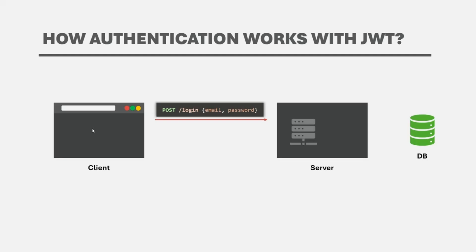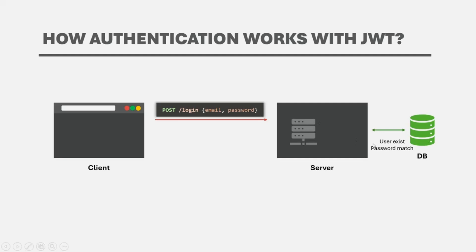The login request is a POST request, and with that POST request we need to send a username or email and password in order to authenticate the user. So in the request body, we are going to have an email or username and the password. On the server, the web application will check if the user exists and if the password provided for that user is a correct match. It fetches the user information based on the email or username from the database and checks if a user already exists in the user table.